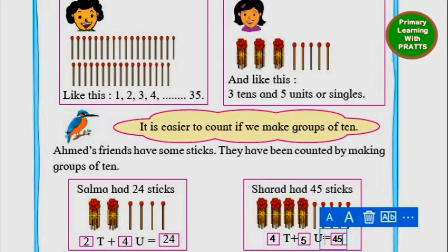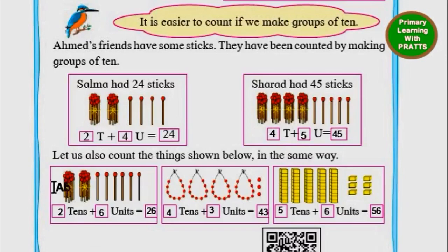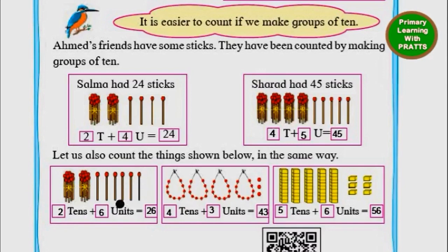Let us also count the things shown below in the same way — that is, making groups of 10 and counting. We count the bundles of sticks: 1, 2 — which is equal to 2 tenths. Now how many single units are there? 1, 2, 3, 4, 5, 6 — so we write 6 units. 2 tenths plus 6 units is equal to 26.